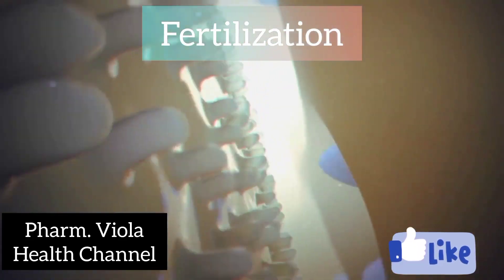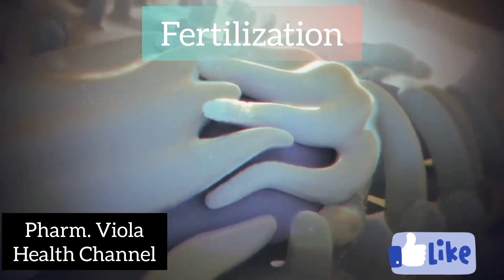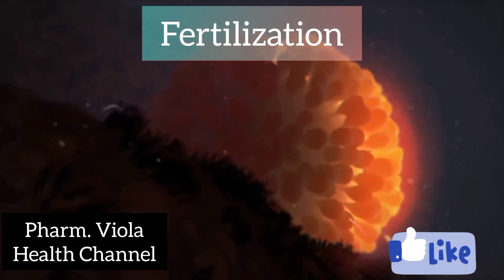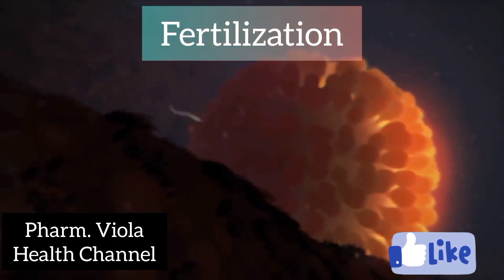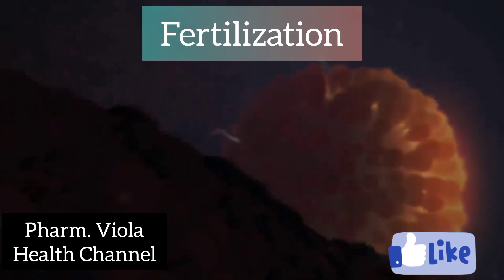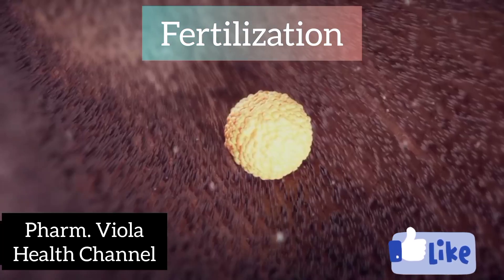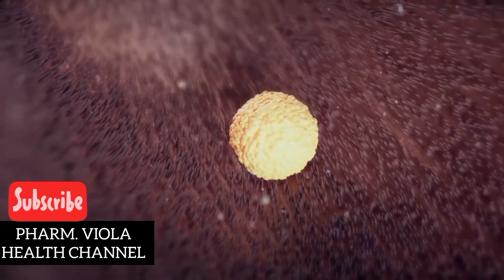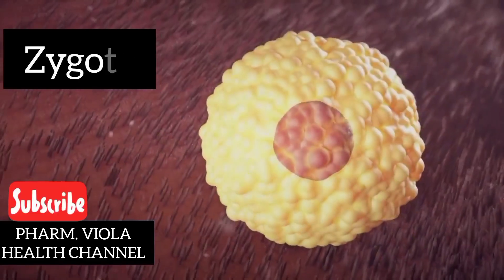Fertilization marks the beginning of the reproductive journey. It occurs when a sperm cell, released during ejaculation, successfully penetrates and fuses with an egg ovum in the fallopian tube. This forms a fertilized egg, or zygote, containing the genetic material from both the male and female partners.